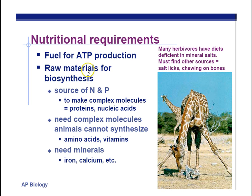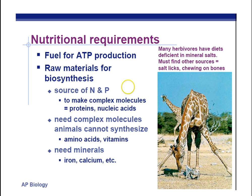Nutritional requirements. Fuel for ATP production. We need nitrogen for our proteins — that N-C-C backbone of the amino acids — and we have that middle carbon which has functional groups coming off of it. So we have to get some nitrogen and phosphorus. Remember the phospholipid bilayer is made of phosphate and two fatty acid tails on those phospholipids — you've got to have some phosphorus for that. Also, the sugar and phosphate backbone of DNA is important as well. Without phosphorus, you can't make the backbones of DNA.